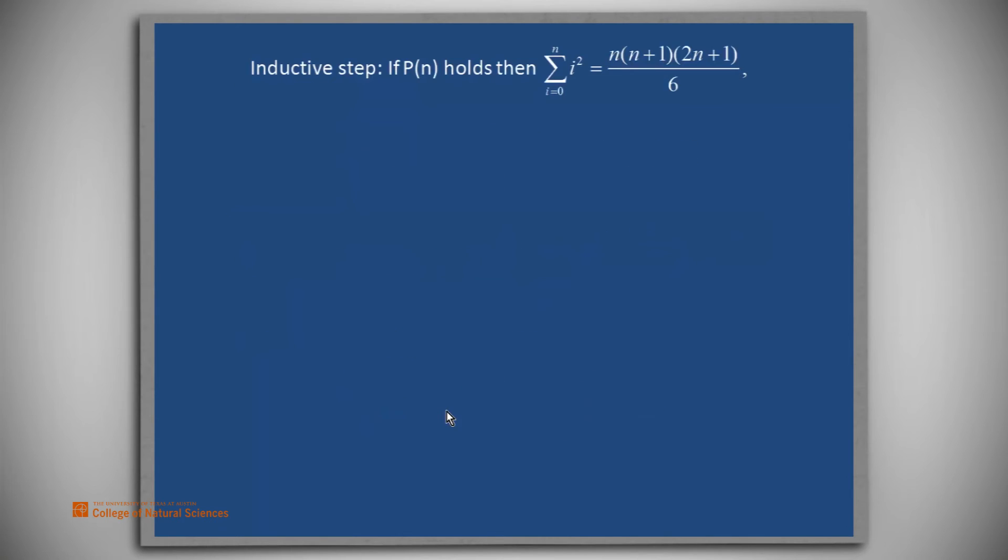Now, the inductive step. We are allowed in an induction proof to assume that the predicate holds for a particular value of n, and then we want to show that it holds for n+1.